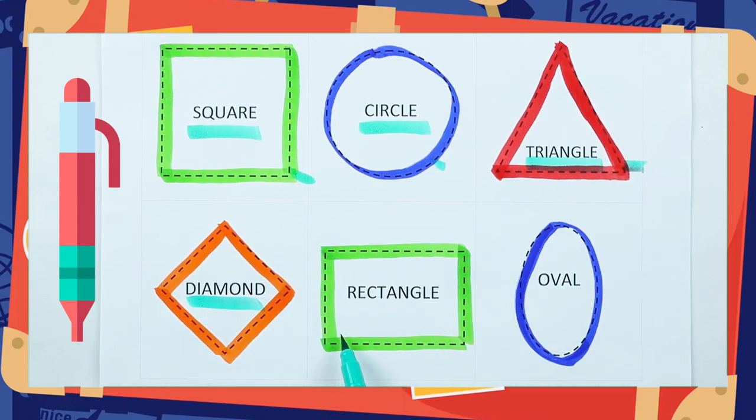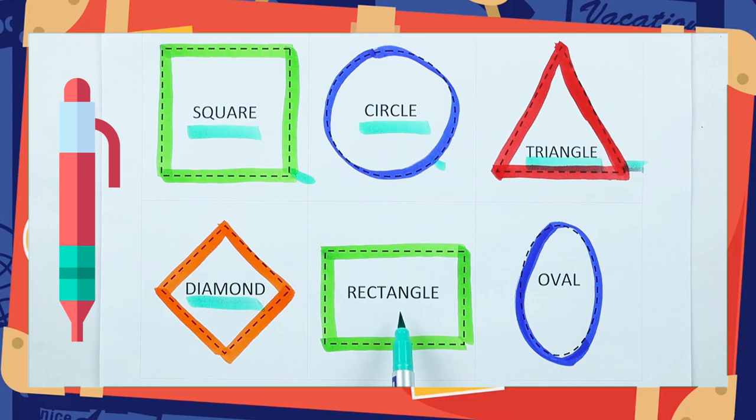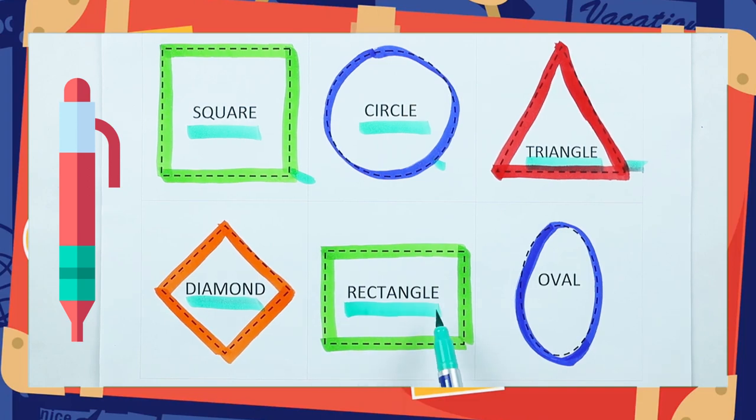Which shape is this? Rectangle. R-E-C-T-A-N-G-L-E. It's a rectangle, with green color.